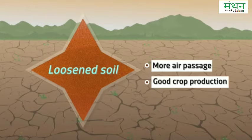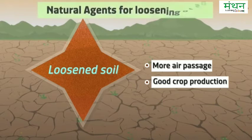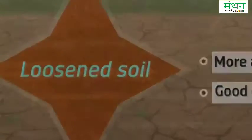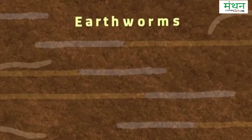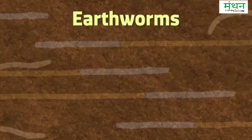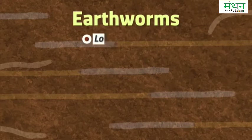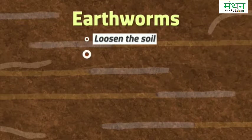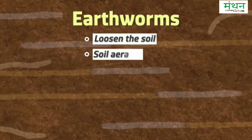Do you know any natural agents that help this process? We usually refer to them as friends of the farmers. The answer is earthworms. They help loosen the soil and also aid in soil aeration.